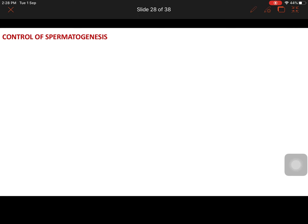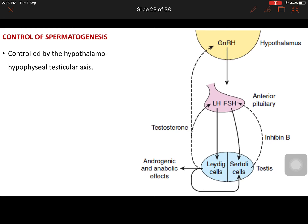Let us discuss the control or regulation of spermatogenesis. Spermatogenesis is mainly regulated by the hypothalamo-hypophysial-testicular axis. GnRH hormone is released from the hypothalamus, which acts on the anterior pituitary to release two hormones: luteinizing hormone (LH) and follicle stimulating hormone (FSH). LH acts on Leydig cells and FSH acts on Sertoli cells.